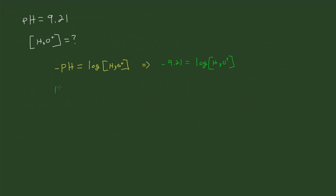So we have 10 to the negative 9.21, and that's going to be equal to 10 to the log base 10 of the concentration of hydronium ion. So these are inverse operations, they cancel.